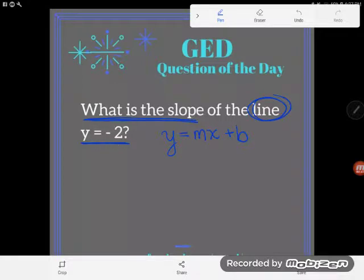And students say, hey, there's no x in this. There's only one number. So is it m? Is it b? How do I translate this?